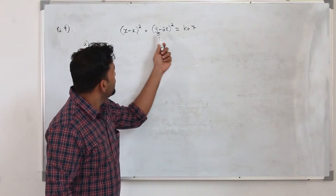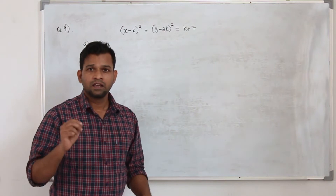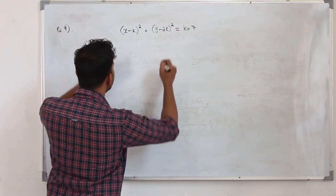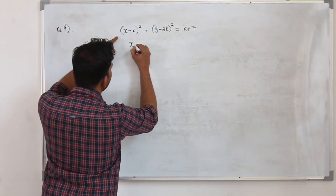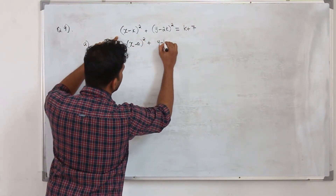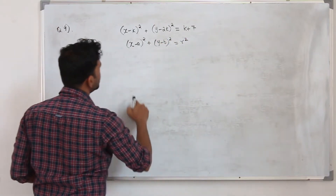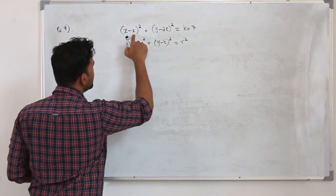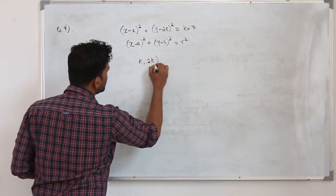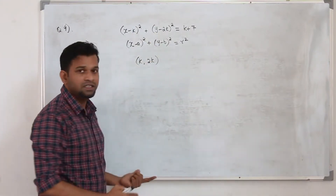You are given the equation of the circle in terms of k. They want you to find the center and radius of the circle. If we compare this with the general form of the equation of a circle, x minus a whole square plus y minus b whole square equals r squared, the center is a comma b. So you can write it as k comma 2k, because our a is k and b is 2k.